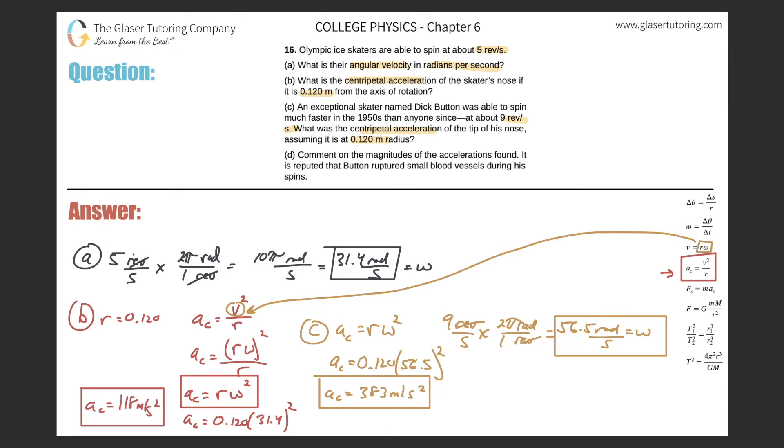Anyway, easy enough, let's move on to D. Comment on the magnitudes of the accelerations found. It is reputed that Button ruptured small blood vessels during his spins. So basically just relate this to G. Okay, meaning related to the force of gravity. So what I can do here for the first value, remember G is equal to A over 9.80. So the G's here is 118 over 9.80. And this is 118 over 9.8. So 12, that's a lot. So 12 G's. So that's the centripetal acceleration related to how many times gravity it is. It's 12 times gravity.